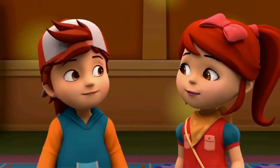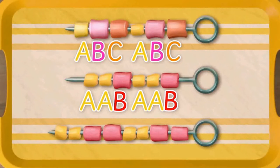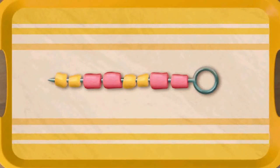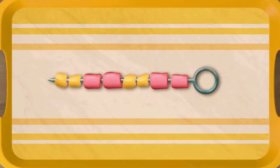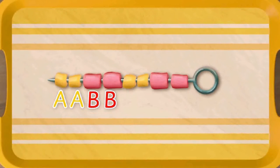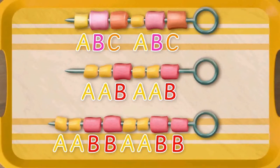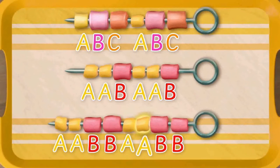I'm no less — watch me! In the third set of marshmallows, there's yellow, yellow, red, red — yellow, yellow, red, red. I got it! It's A-A-B-B, A-A-B-B. So this one is an A-A-B, A-A-B pattern, and this one is an A-A-B-B, A-A-B-B pattern. Right?